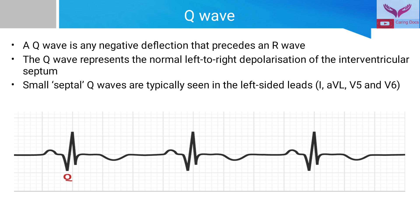Q-wave is any negative deflection that precedes an R-wave. It represents the normal left to right depolarization of the interventricular septum. Small septal Q-waves are typically seen in left-sided leads, i.e. lead 1,